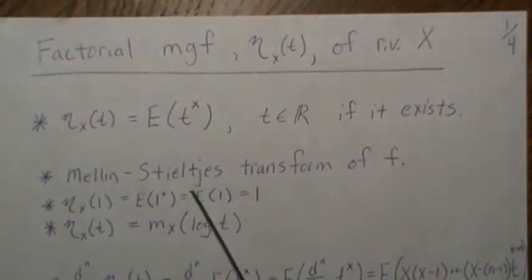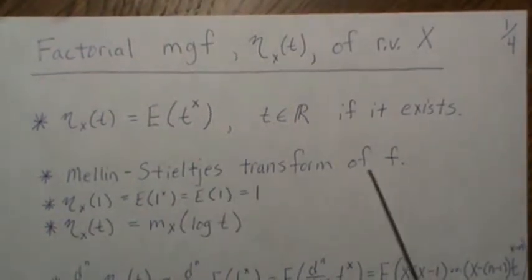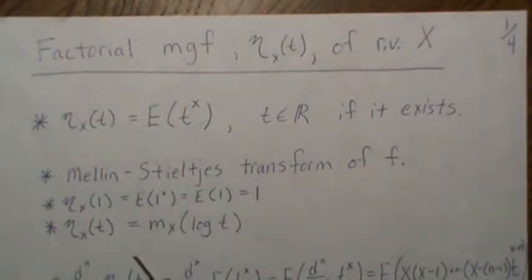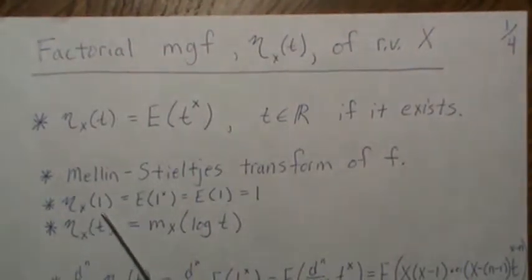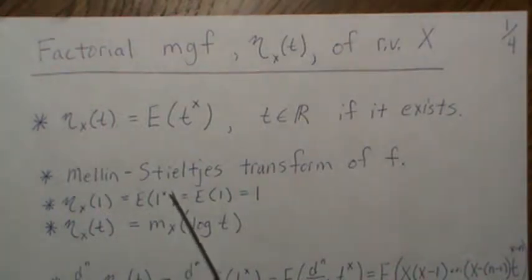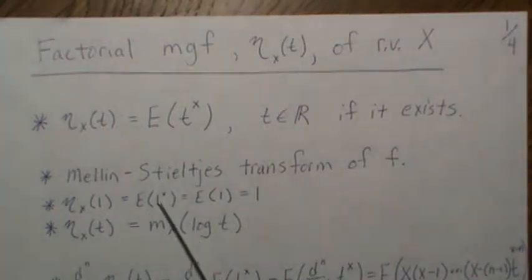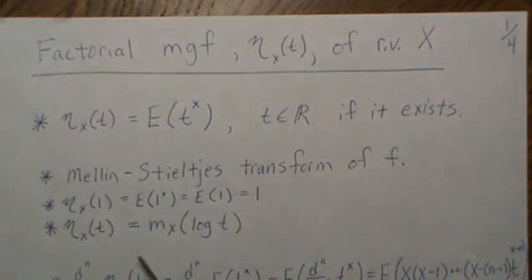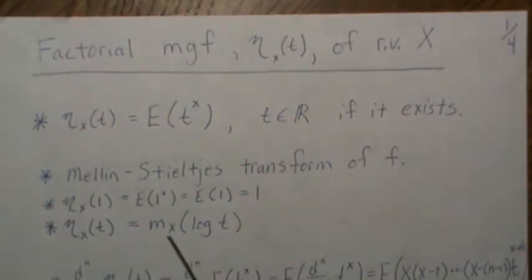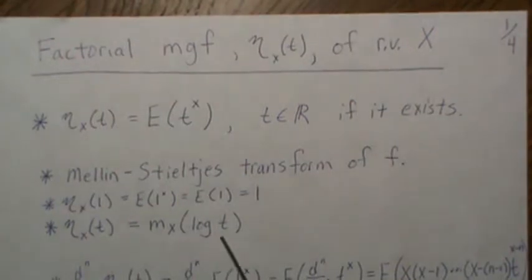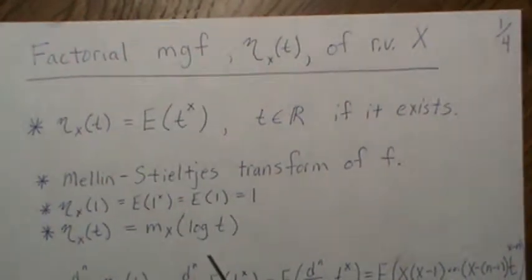Sometimes it's called a Mellin-Stieltjes transformation. The eta of 1 is the expected value of 1 raised to the x, which equals 1. And this is related to the moment generating function through the log of t transformation.